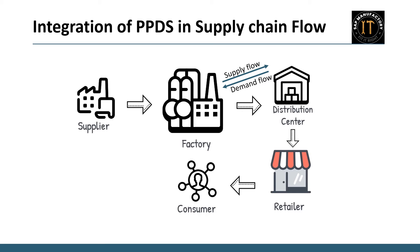The next topic is the strategic integration of PPDS within the supply chain process. While PPDS functionalities primarily operate within the factory, it is crucial to acknowledge their significance beyond these boundaries. Understanding the external functionalities is key — but where does the input data for PPDS come from? It originates from plan orders, and understanding how these plan orders are generated requires a dive into the supply chain process flow.